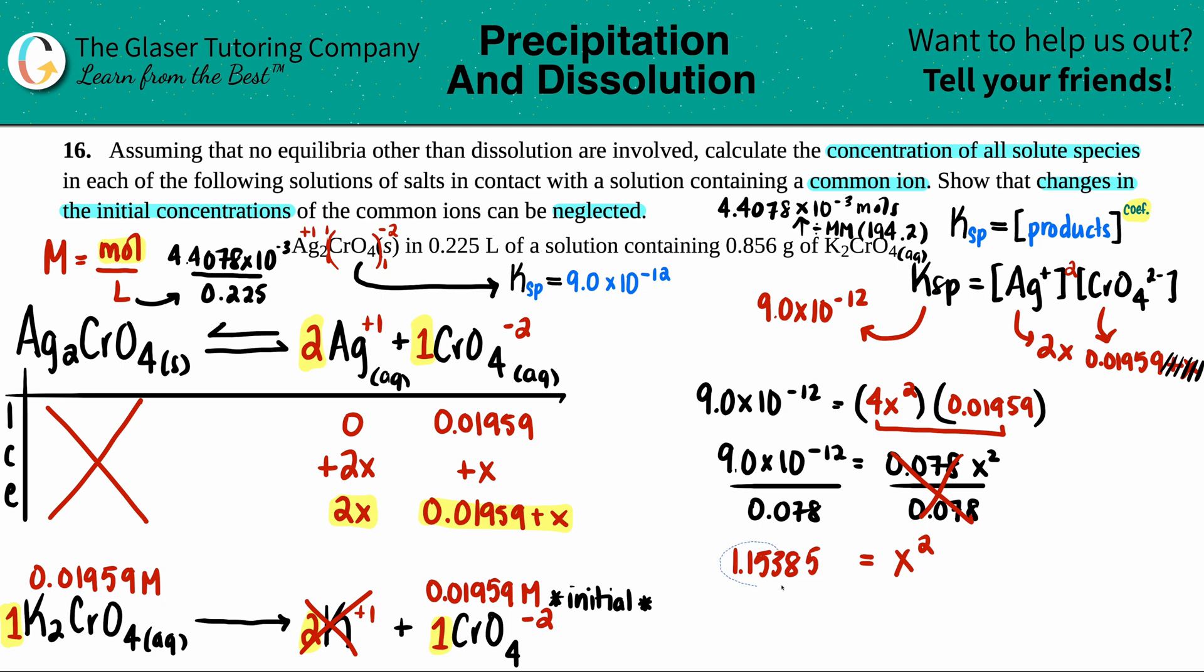I get 1.15385 times 10 to the negative 10th. Got to take the square root to solve for x. Square root of 1.15385 times 10 to the negative 10th, with three sig figs: 1.07 times 10 to the negative 5th, and that's molarity.